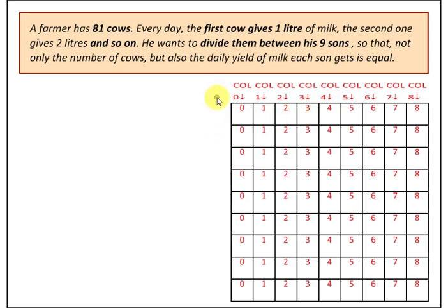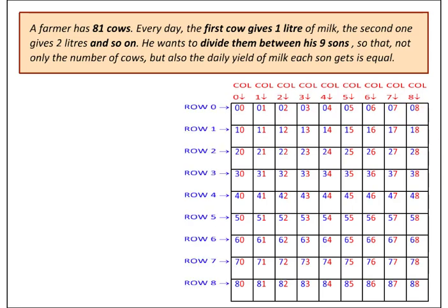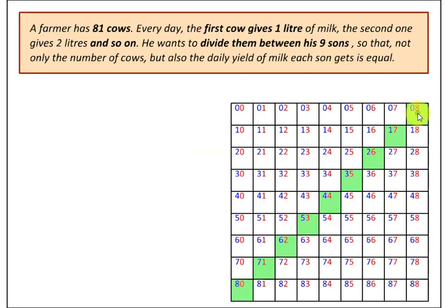Each son should get a cow from every column and a cow from every row. The simplest way to select 9 cows that cover all rows and all columns is the diagonal — this diagonal covers all rows and all columns. So here is already one solution: at least one son can get these diagonal cows.